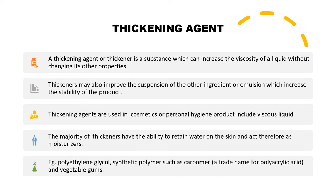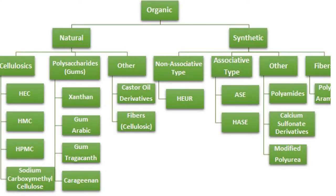A wide number of substances like polyethylene glycol, synthetic polymers such as carbomers, and vegetable gums of natural origin are found as thickening agents. When we consider the classification, it can be based on organic products, further subdivided into two categories: natural and synthetic.